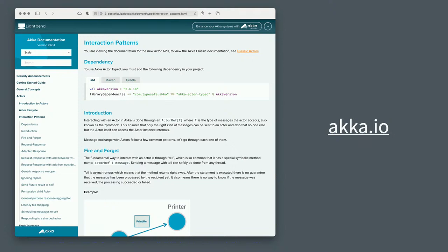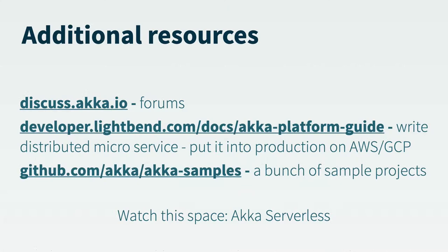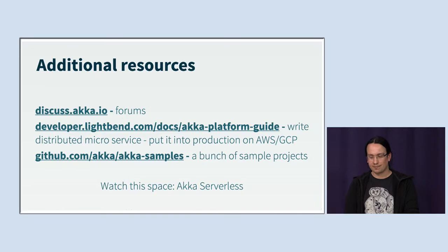That's kind of the end of it. All of these components have a lot of documentation — we've put a lot of effort into documenting them in the reference documentation, which you can find through the akka.io site. There's also a discussion forum at discuss.akka.io. We also have something called the Platform Guide, which is a more high-level description of how you write distributed microservices with Akka and how you put it into production on AWS or GCP. And as I mentioned, we're working on Akka Serverless, so keep your eyes open for what's coming there because it will be pretty cool. Thanks for listening.